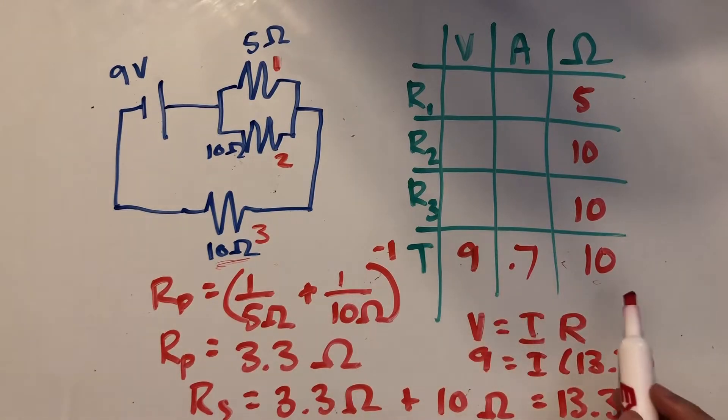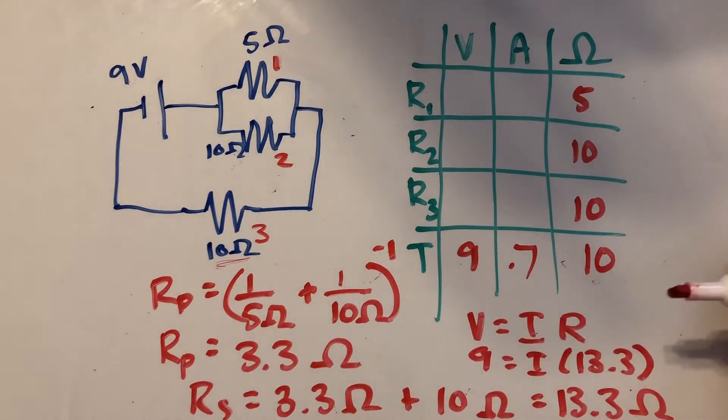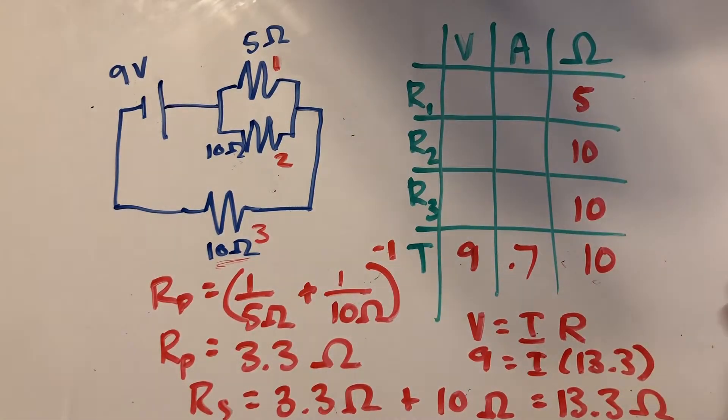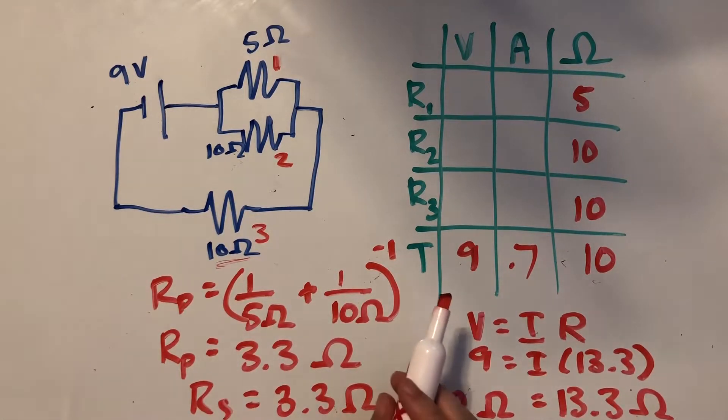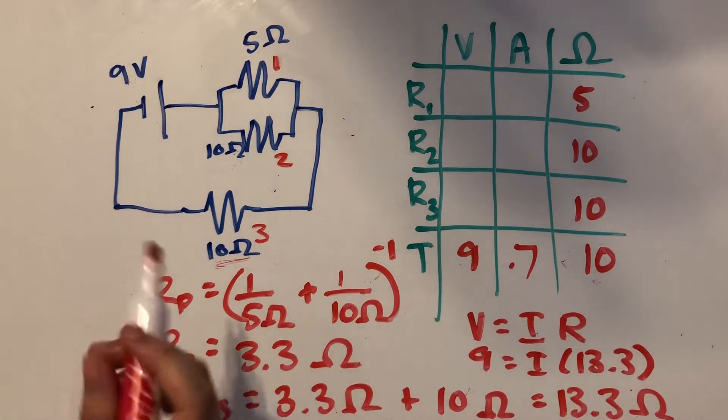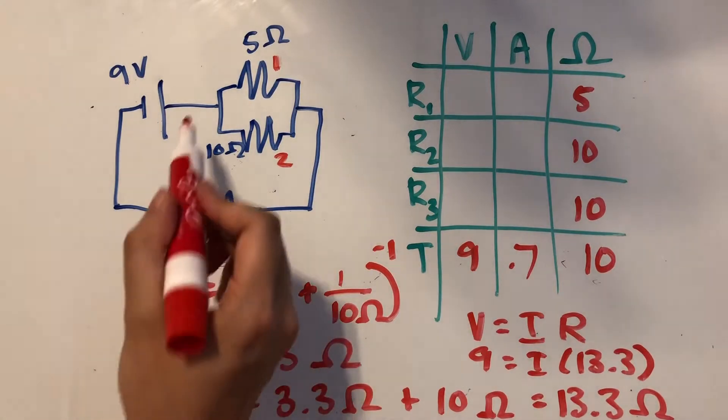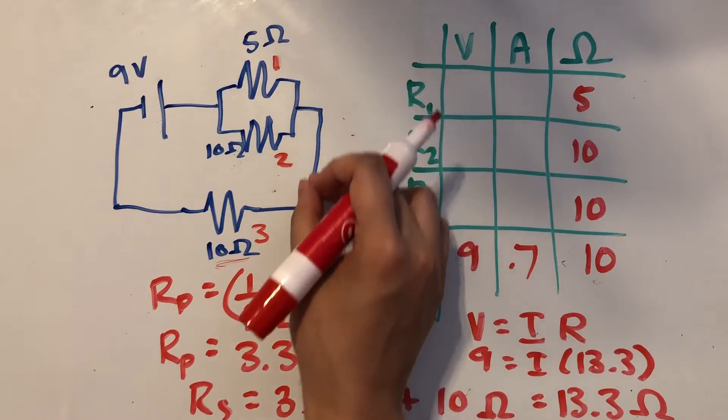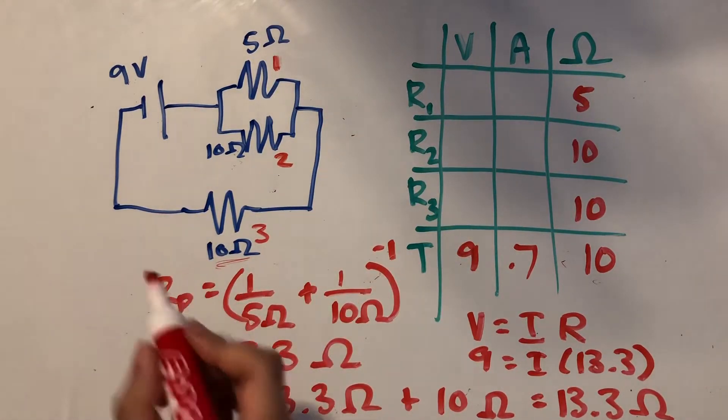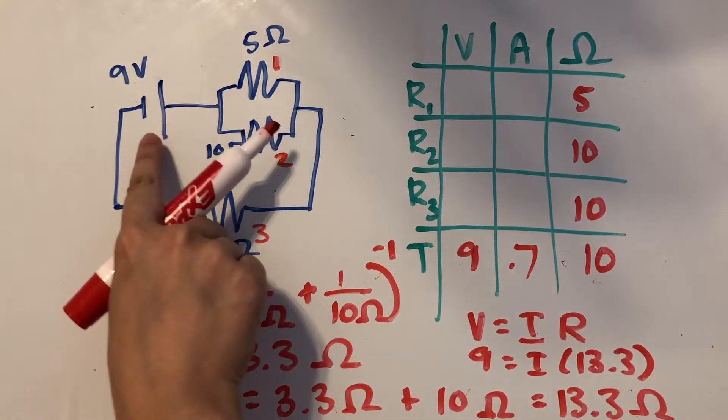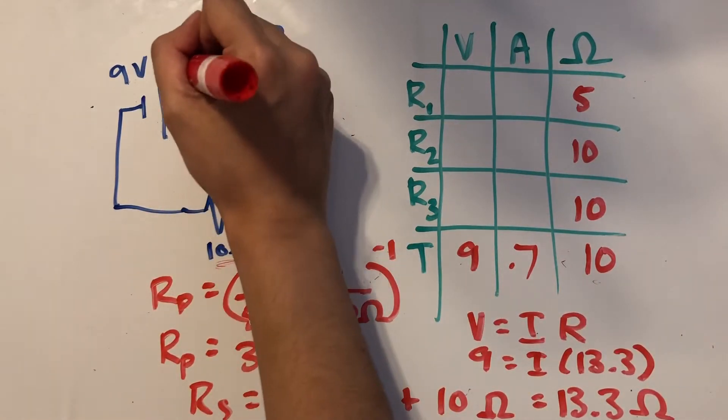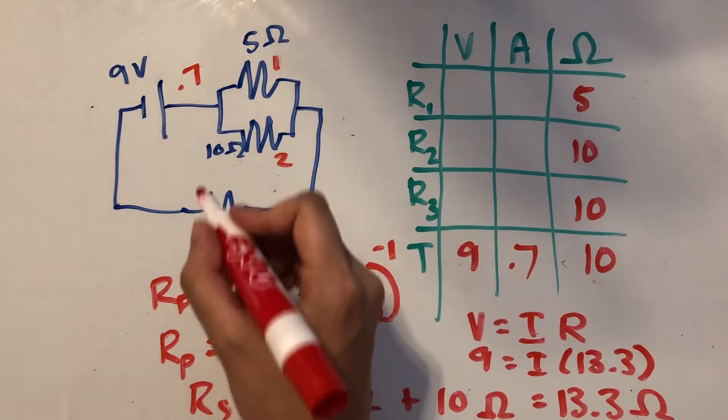So we got all the easy stuff filled out. The next step would be to try to find one of these other values, maybe using one of Kirchhoff's rules. So the first one that I can think of is to use Kirchhoff's junction rule, because the current at this point of the junction should also equal the current coming out of the junction. So we know that the current here is 0.7. We just solved for that. So the current coming out of the battery is 0.7 amps.